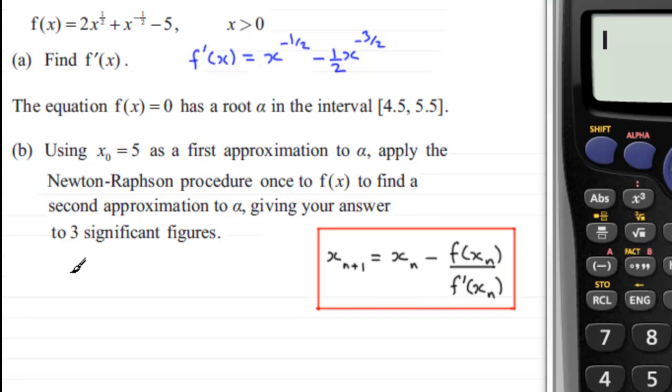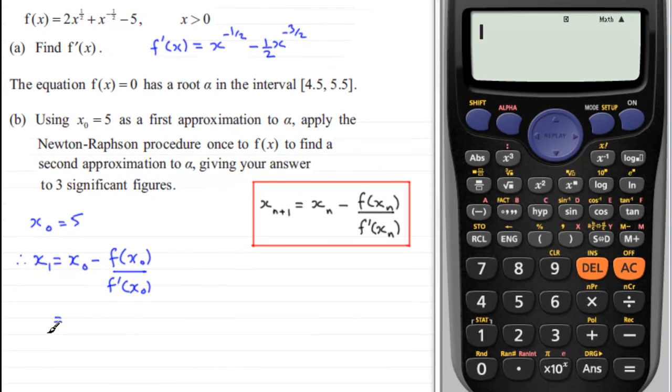So if we start with x₀ equaling five, then we can get x₁ by using the Newton-Raphson's procedure: it's going to be equal to x₀ minus f(x₀) over f'(x₀). And we know x₀ is five, so all I've got to do is just substitute this into the formula. And we can do it on the calculator here.